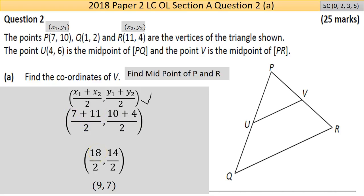7 + 11 is 18. I'll do the division by 2 in a second. 10 + 4 is 14. We're basically at the answer. Can this be simplified? 2 into 18 goes 9 times, 2 into 14 goes 7 times, so my answer is (9,7). Job done, that's part A.